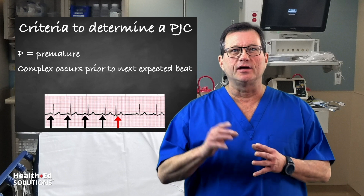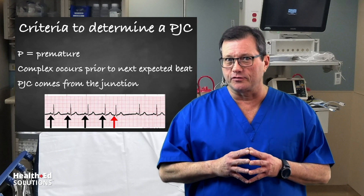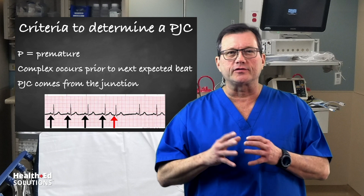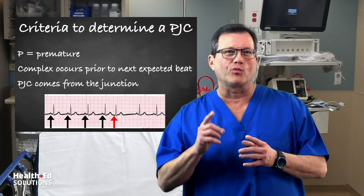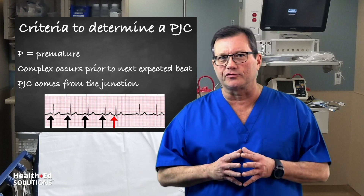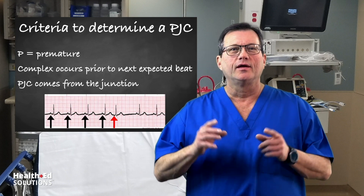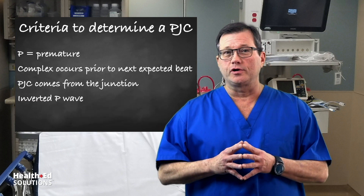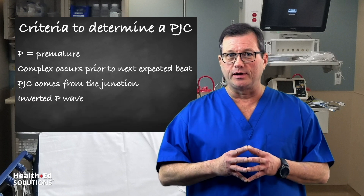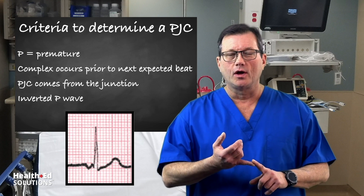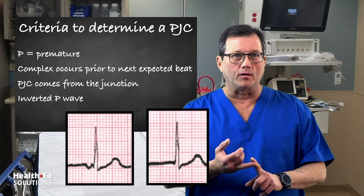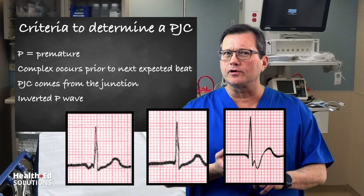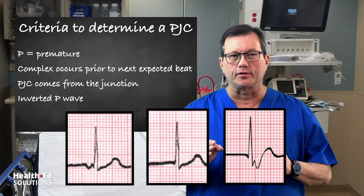Now, it's a PJC, which means it's coming from the junction. When the junction fires off, it's going to send a wave of electricity retrograde back through the atrial chamber. This will create an inverted P wave. You can have an inverted P wave before the QRS, you may have no P wave at all, or you may have an inverted P wave after the QRS.